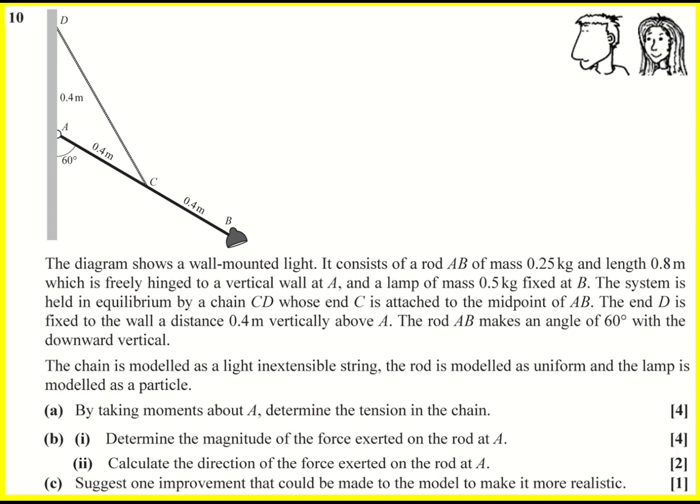This is a static rigid body problem. So we have a wall mounted light consisting of a rod AB as shown, mass 0.25 kilograms. I'll bring that back in in a minute, we don't know where it's acting yet. Length 0.8 which is indicated on the diagram, freely hinged at a vertical wall.